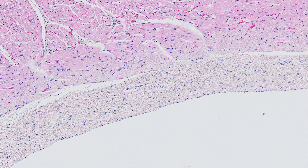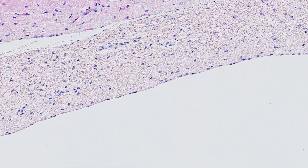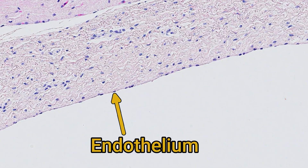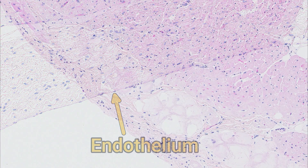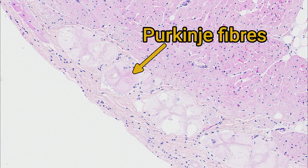In contrast, the endocardium also has a lining of squamous endothelial cells overlying connective tissue, but it lacks blood vessels, nerves and adipose. Occasionally, you might find Purkinje fibres here, but we'll discuss those in detail later.